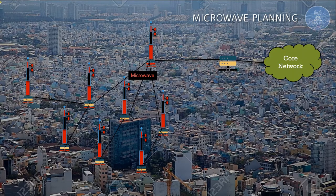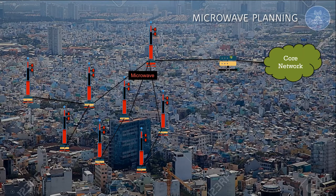Let's start with the microwave planner. What does a microwave planner do in day-to-day activities? Consider a microwave network where microwave sites are connected through microwave and traffic goes to a centralized node, where a fiber drop hands over the traffic from microwave media to fiber media. Fiber, having enormous capacity, takes care of everything to the core network. When building a new site for coverage or capacity purposes, I need to connect this new site to an existing tower.